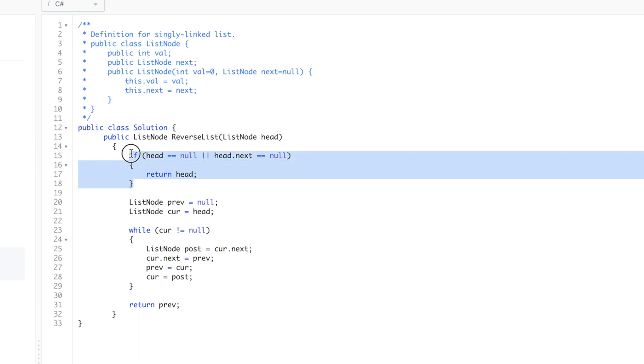If this validation passes, we initialize these two variables called previous and current, which will hold the value. The current will hold the current head and the previous will be null before we start the loop.